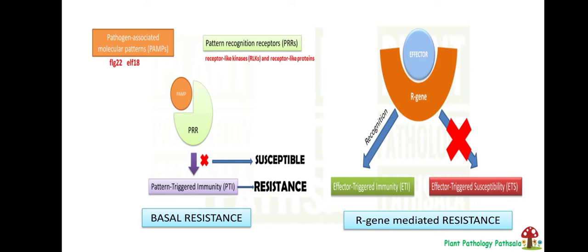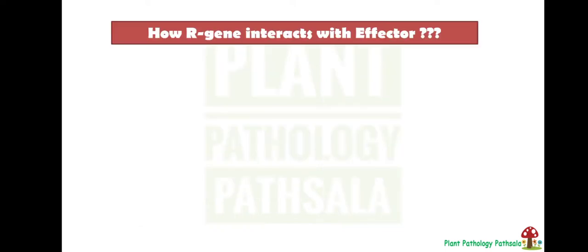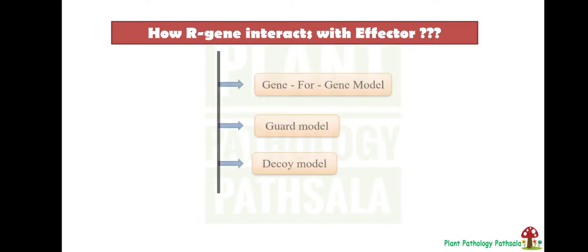We will discuss how this gene interaction — that is between the effector and R gene — occurs. Three models describe how R genes interact with effector molecules: the gene for gene model, the guard model, and the decoy model.